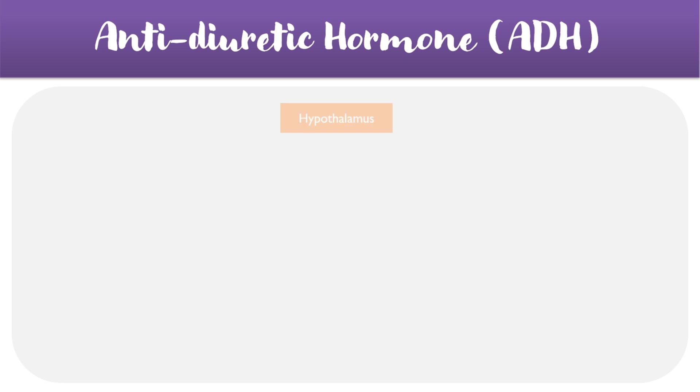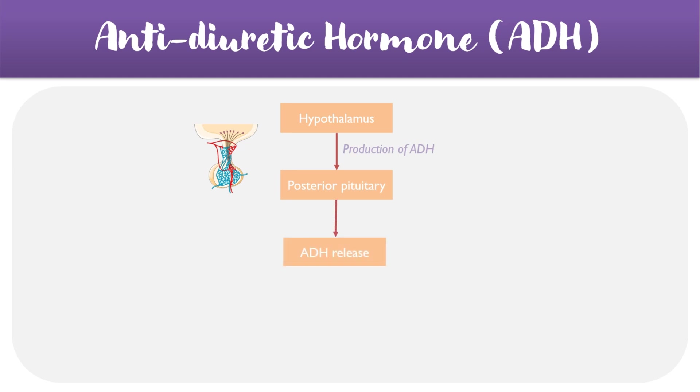The hypothalamus is responsible for producing ADH, and this ADH is then stored in the posterior pituitary gland before being released into the blood.